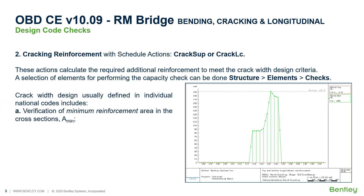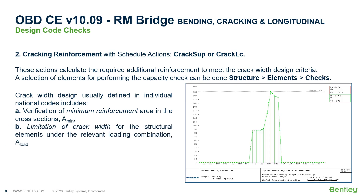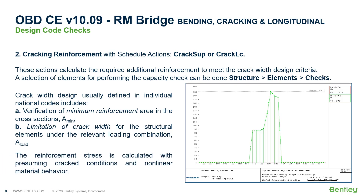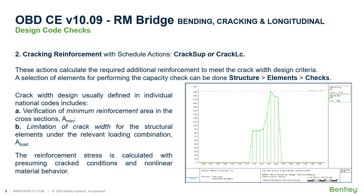The crack width design, usually defined in the individual national codes, includes the verification of a minimum reinforcement area and the limitation of the crack width for the structural elements under the relevant load combination. The reinforcement is calculated presuming the cracked conditions and the non-linear material behavior.